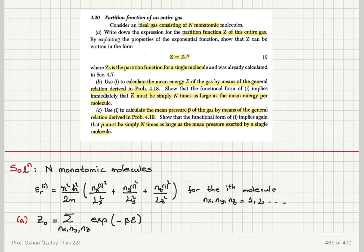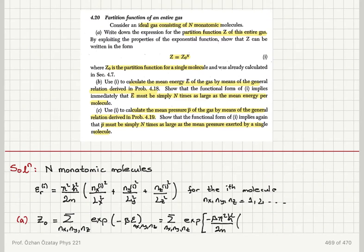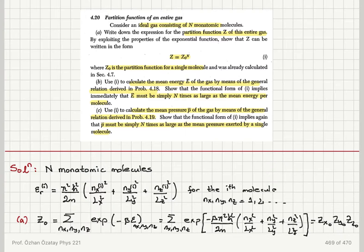Since epsilon depends on Nx, Ny, and Nz, this can be written as the sum over Nx, Ny, and Nz of the exponential of minus beta times pi squared h-bar squared divided by 2m, times Nx squared over Lx squared plus Ny squared over Ly squared plus Nz squared over Lz squared. This is in the form Zx0 times Zy0 times Zz0, because we can separate the exponential into a product of independent terms for each direction.